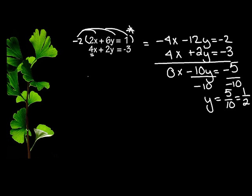So now to get my x value, I can either plug 1 half into the first one or the second equation. But I'm going to do the second equation. So I'm going to have 4x. Okay, so I'm using this one right here. 4x plus 2 times y, and y we decided is a half, equals negative 3.